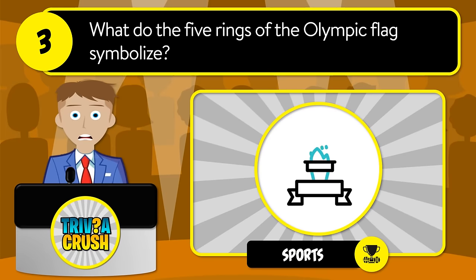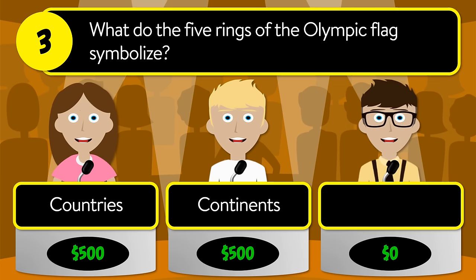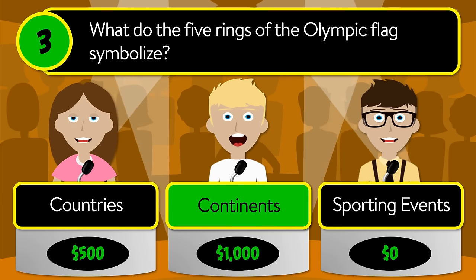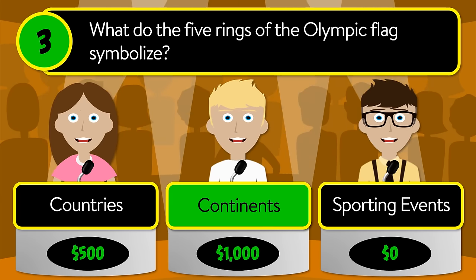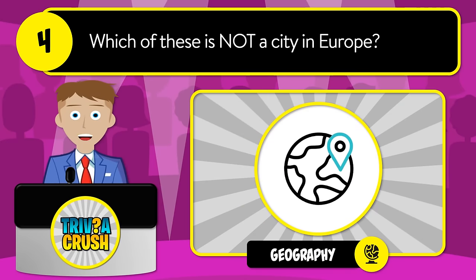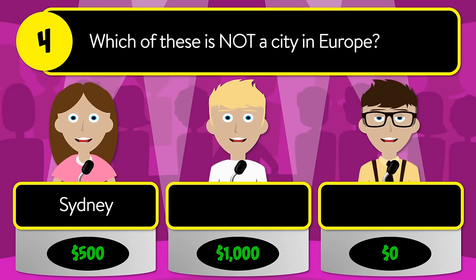Question number three: what do the five rings of the Olympic flag symbolize? Is it countries, continents, or sporting events? The correct answer is continents. Question number four: which of these is not a city in Europe? Is it Sydney,